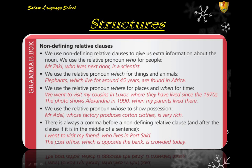Don't forget that there is always a comma before a non-defining relative clause, and possibly after the clause if it comes in the middle of a sentence. For example: 'I went to visit my friend, who lives in Port Said' — comma before. But 'The post office, which is opposite the bank, is crowded today' — comma before and after, because the clause comes in the middle of the sentence.